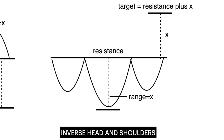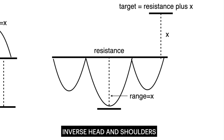The inverse head and shoulders pattern is a bullish reversal pattern made up of an inverted trough or shoulder, followed by a lower trough or head, and then another higher trough which is a shoulder. When price breaks above the inverse head and shoulders pattern, it should be accompanied by above-average volume.